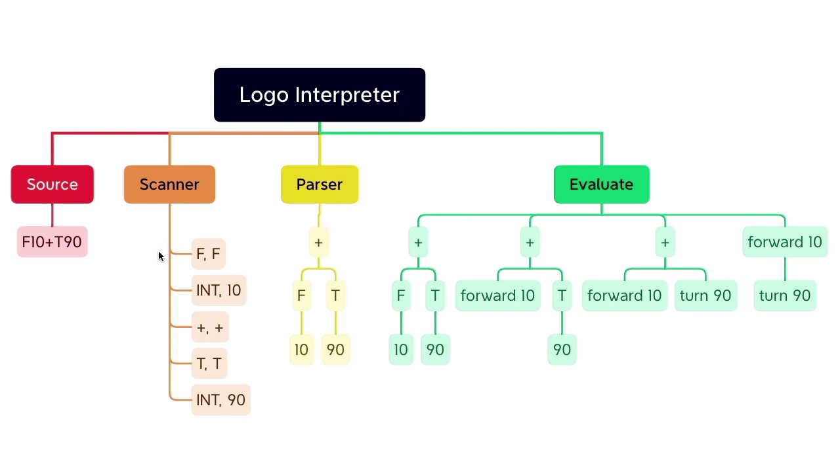The next token has type INT and value 10. The next token has type plus and value plus. And the next token has type T and value T. And the last token has type INT and value 90.